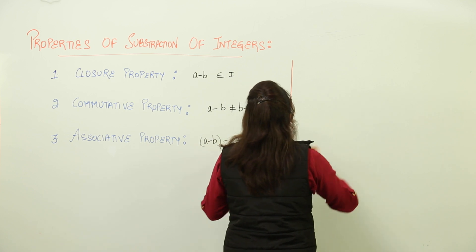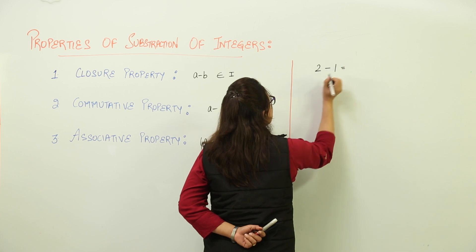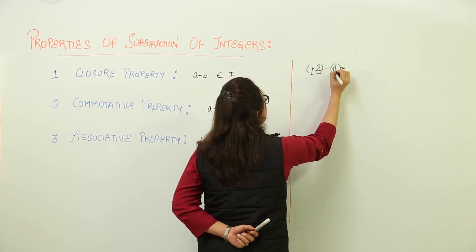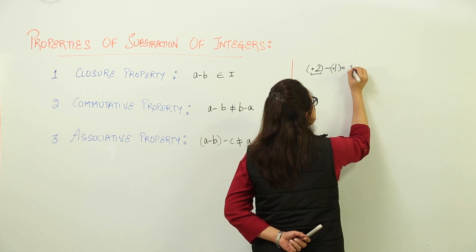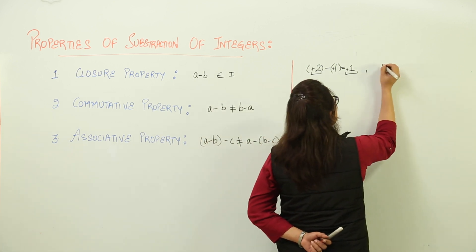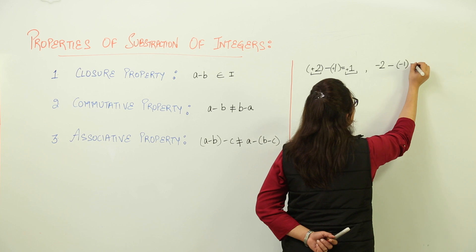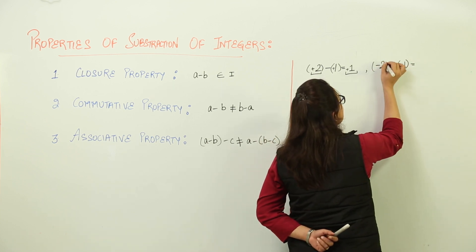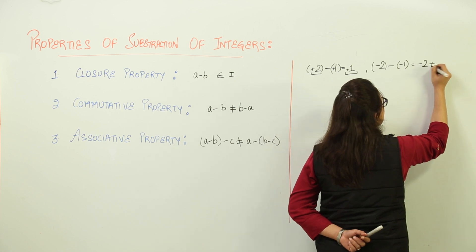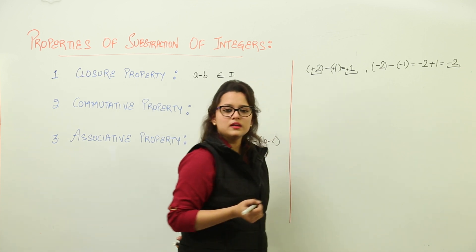Let's say if you are doing 2 minus 1. Now both are positive integers. If you are subtracting two integers, you have got one integer only. Let's take another example: minus 2 minus minus 1. For solving this, minus minus becomes plus, so you get minus 2 plus 1 and you get minus 1. Here also you are getting an integer.